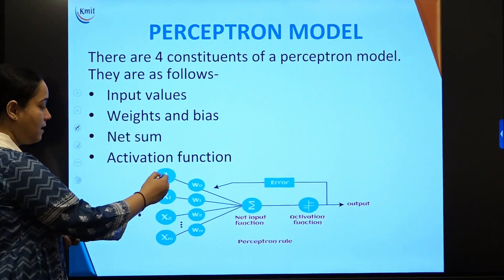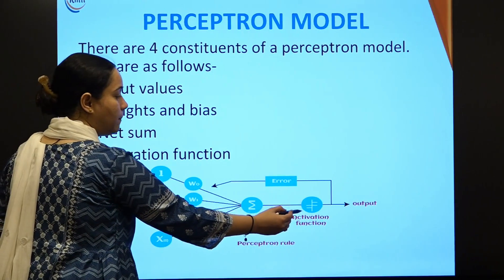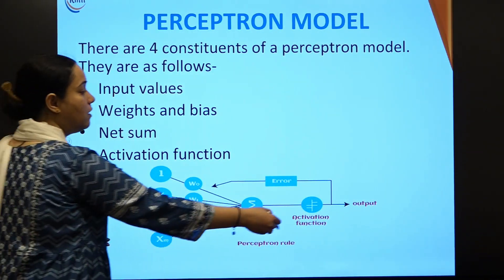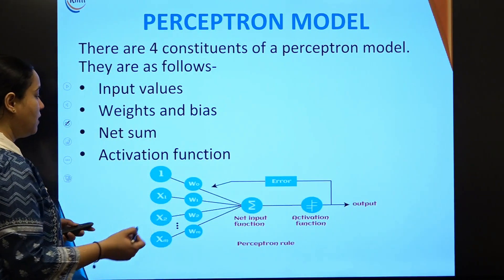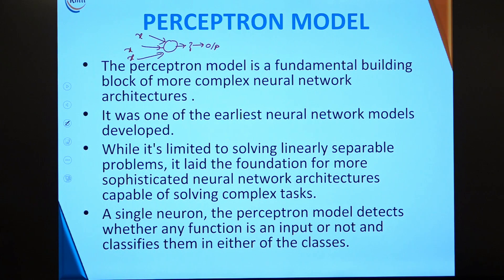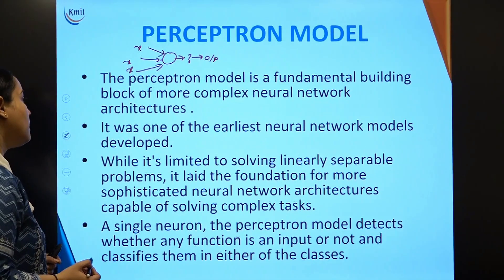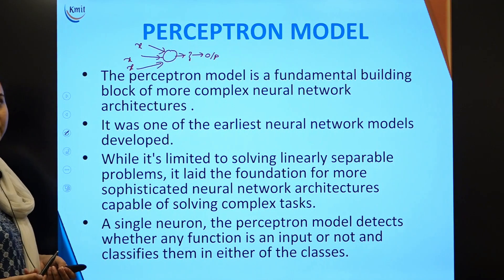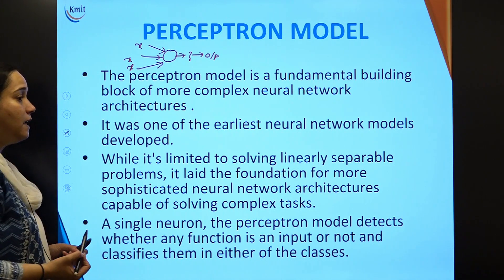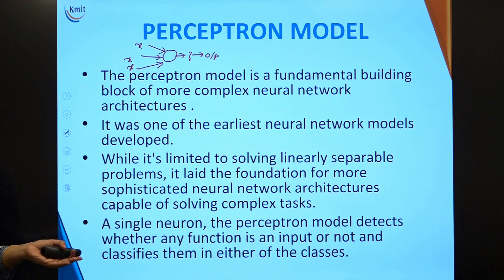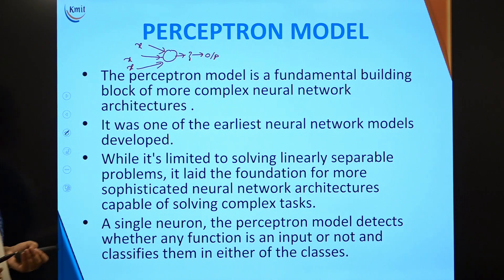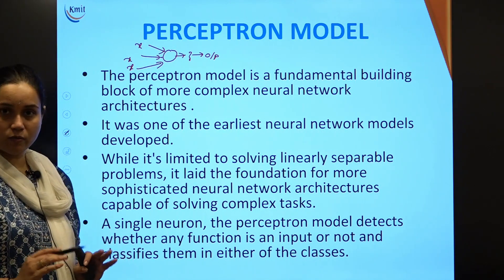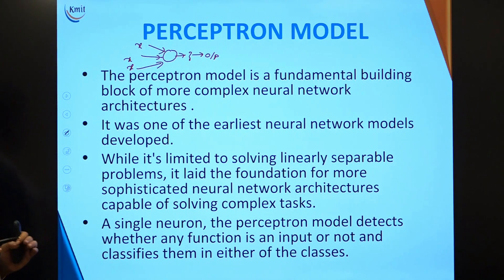The perceptron model was invented to address this. You can see there are n number of inputs passed through an activation function, and then you calculate how much error there was in the prediction — so there was learning in this model. However, the limitation of the perceptron model is that it was only confined to linearly separable problems; it could not work with non-linearity. Despite this limitation, it laid the foundation for more sophisticated neural network architectures.